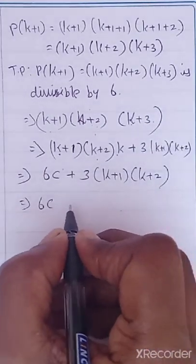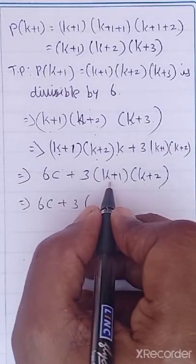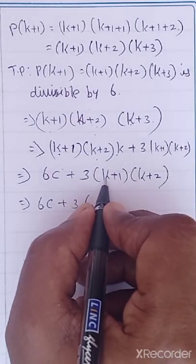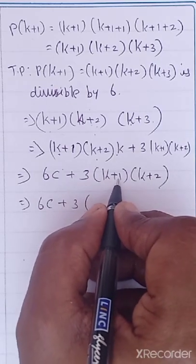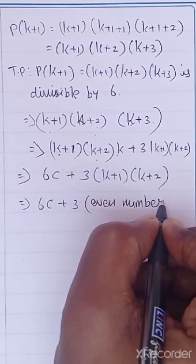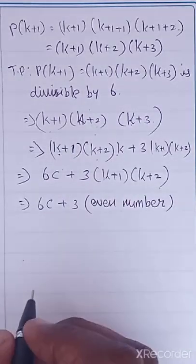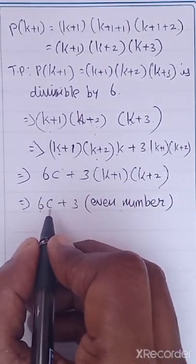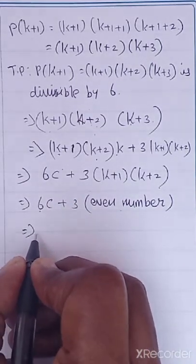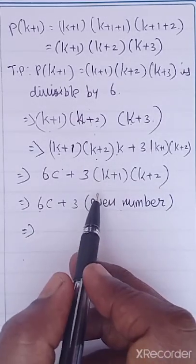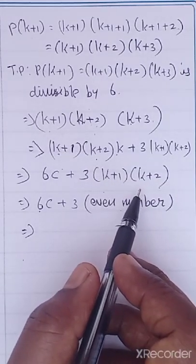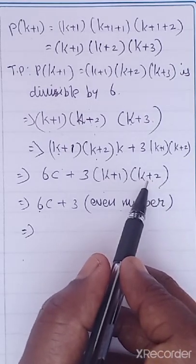So here we have 6C plus 3 into K plus 1 into K plus 2. If you look at K plus 1 into K plus 2, this will always be an even number — whether K is odd or even, the product of two consecutive integers is always even. So 3 times an even number is divisible by 6, and the whole expression is divisible by 6.